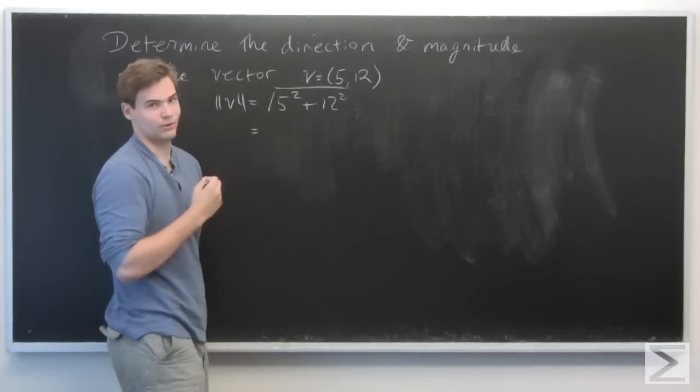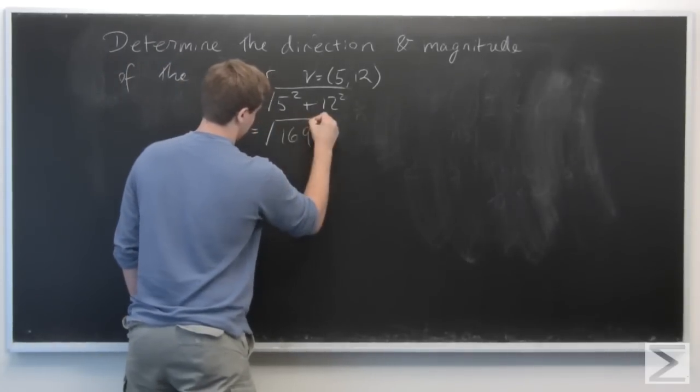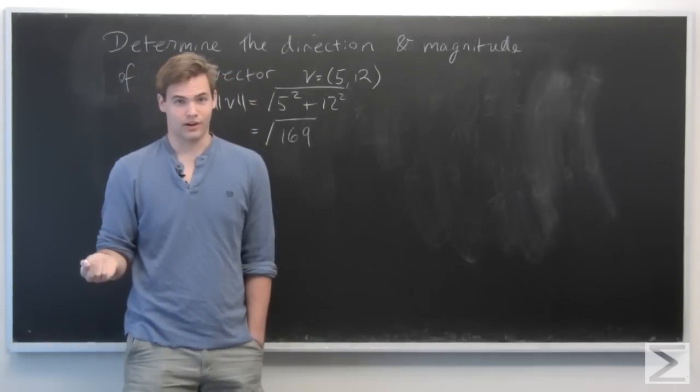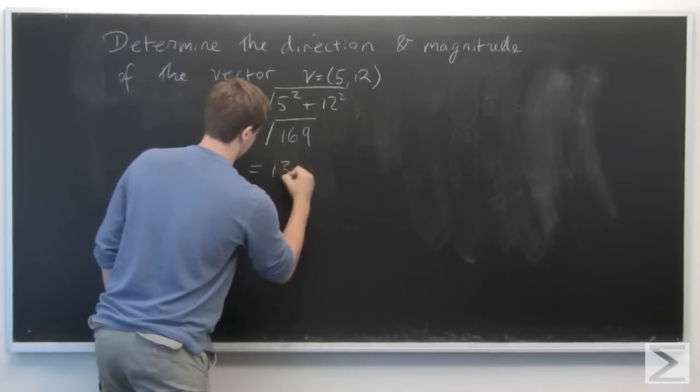So after some quick arithmetic, we get the square root of 169, which is nice because it's a perfect square, so we just simplify right away to 13.